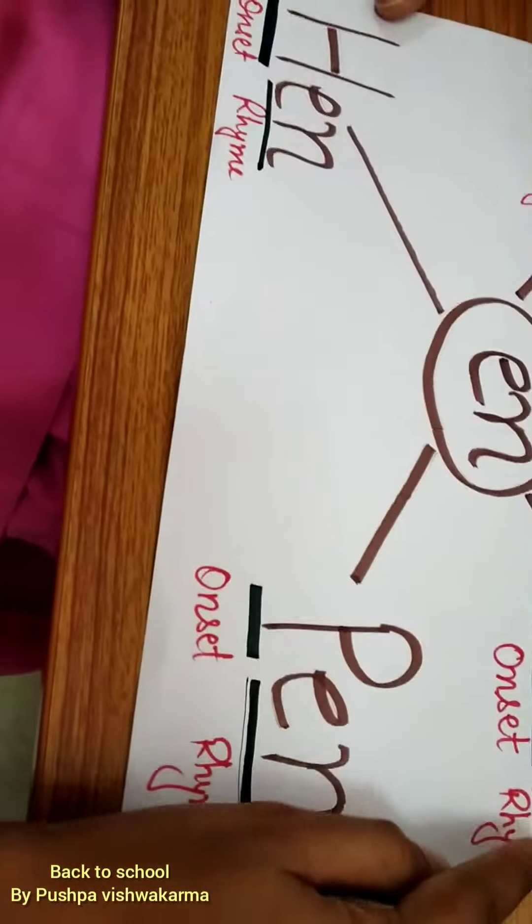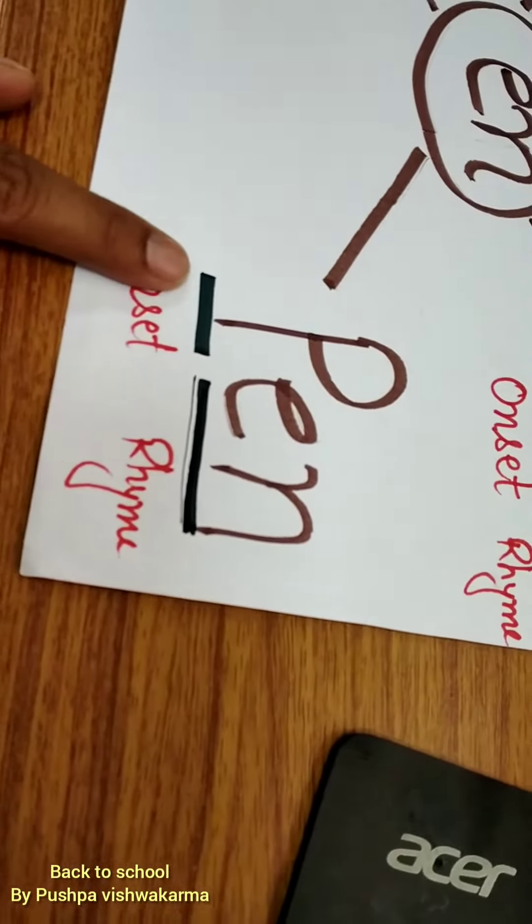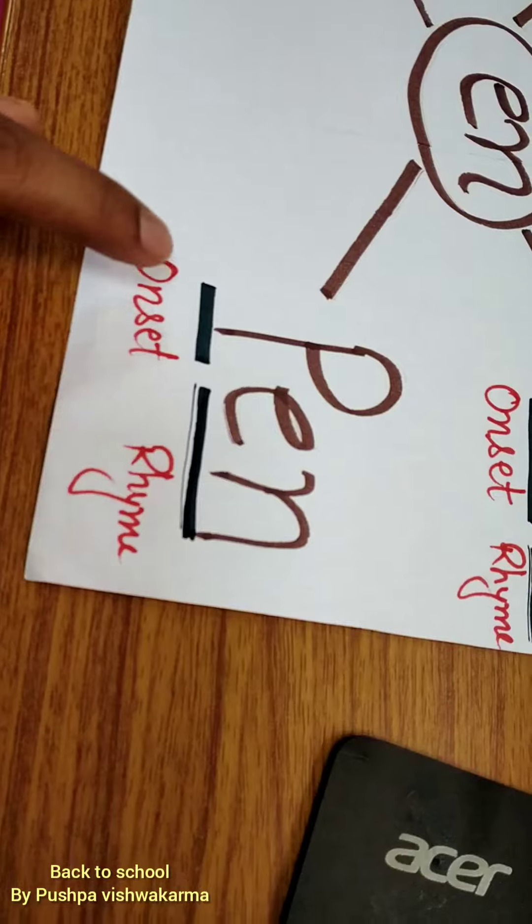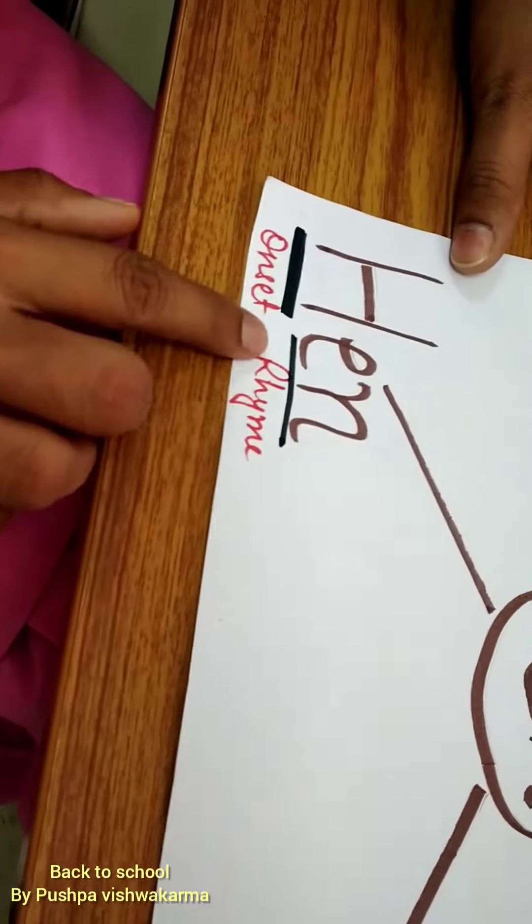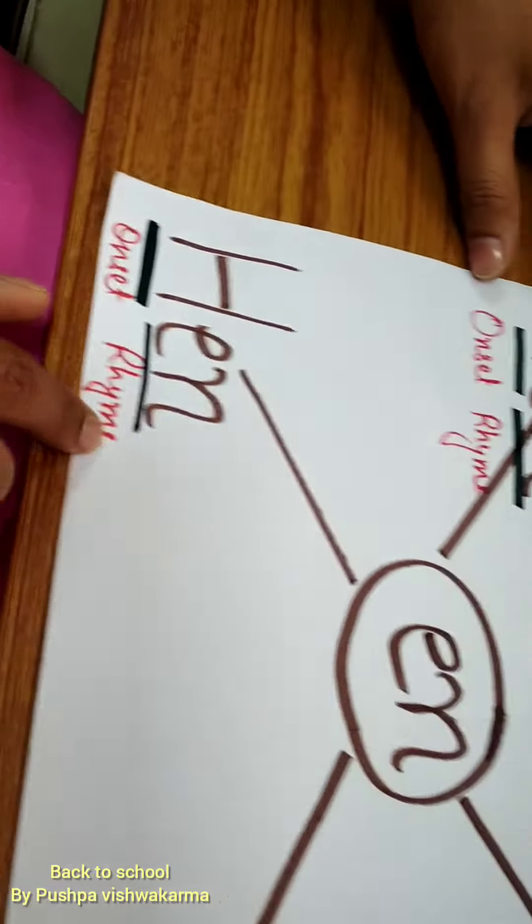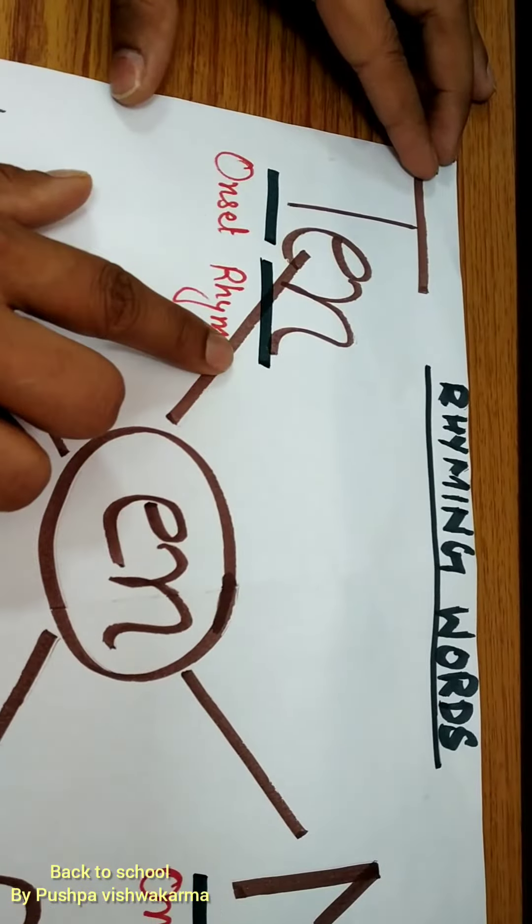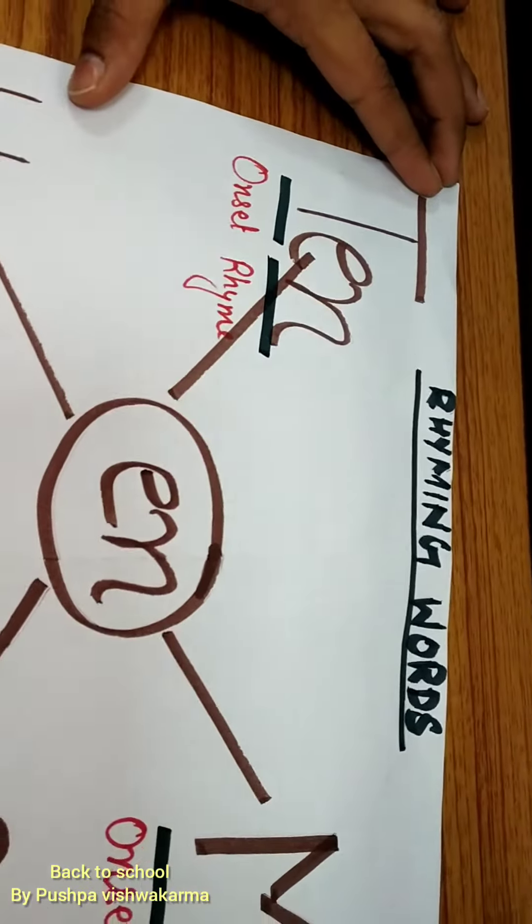Now we have more words: P-E-N, pen; H-E-N, hen; T-E-N, ten. In all these words,